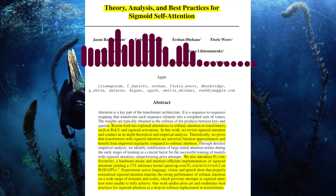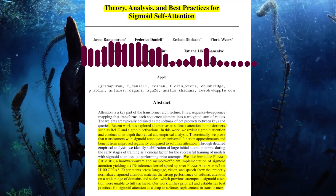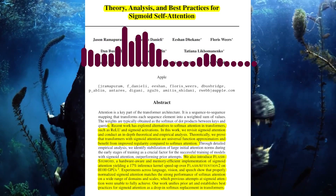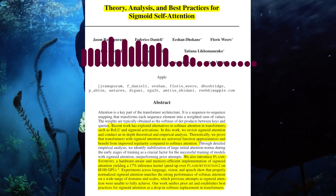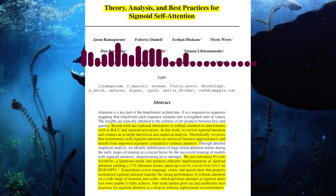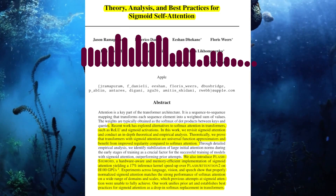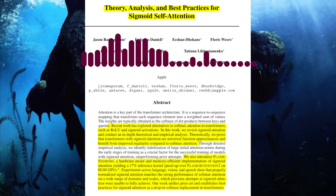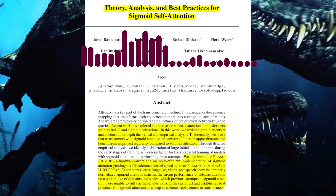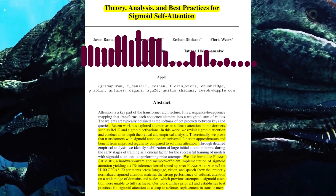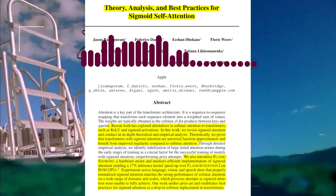Today, we're diving into a paper that explores a potential improvement to the transformer architecture, a key component of many modern machine learning models. The paper, 'Theory, Analysis, and Best Practices for Sigmoid Self-Attention,' proposes replacing the traditional softmax attention mechanism with a sigmoid function.